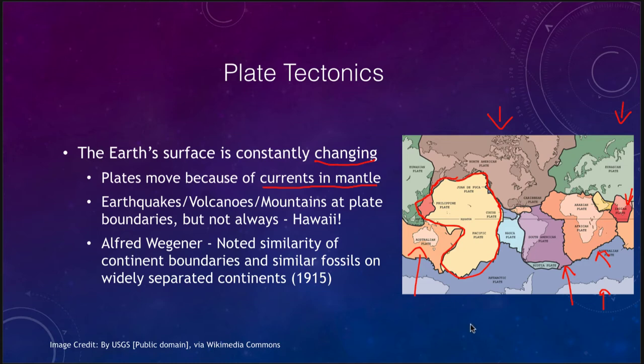It's not always plate boundaries, because we do have volcanoes right in the middle of a plate — Hawaii being one example. Hawaii is right in the middle of the Pacific plate, not anywhere near a plate boundary. That would be what we call a hotspot volcano, present because of a weak spot in the crust of the Pacific plate right there.